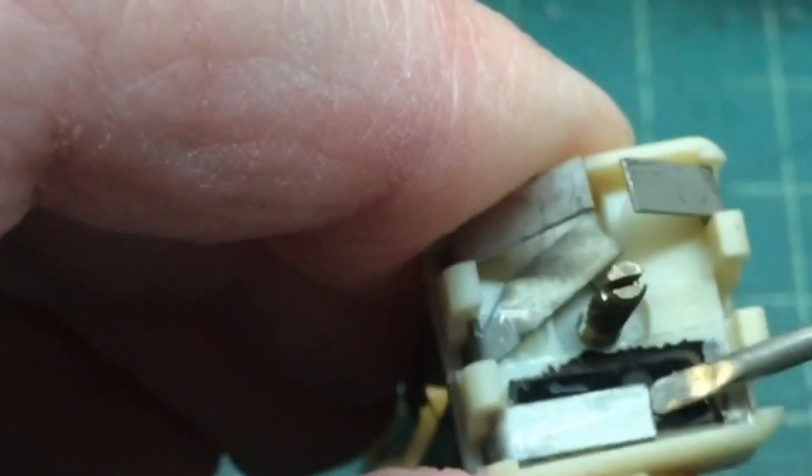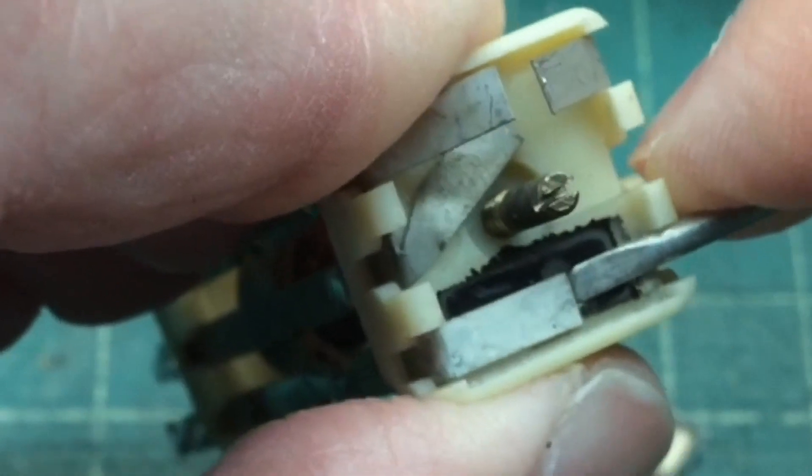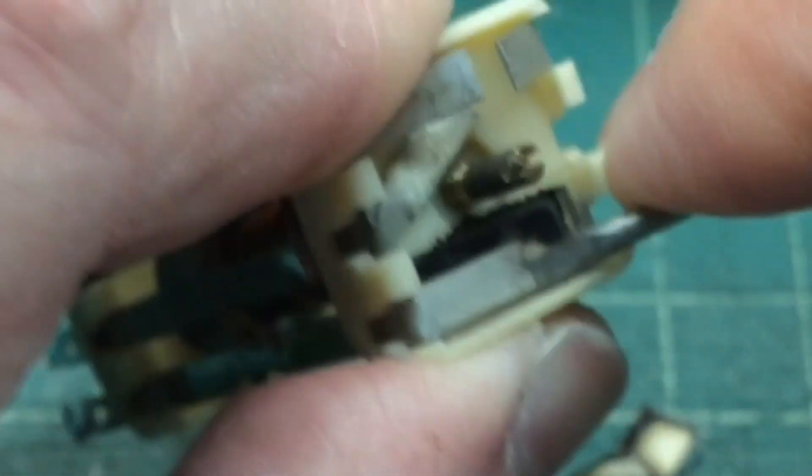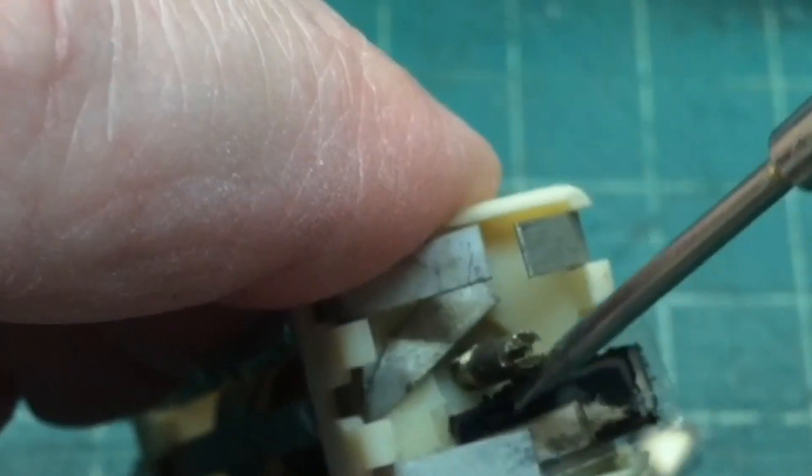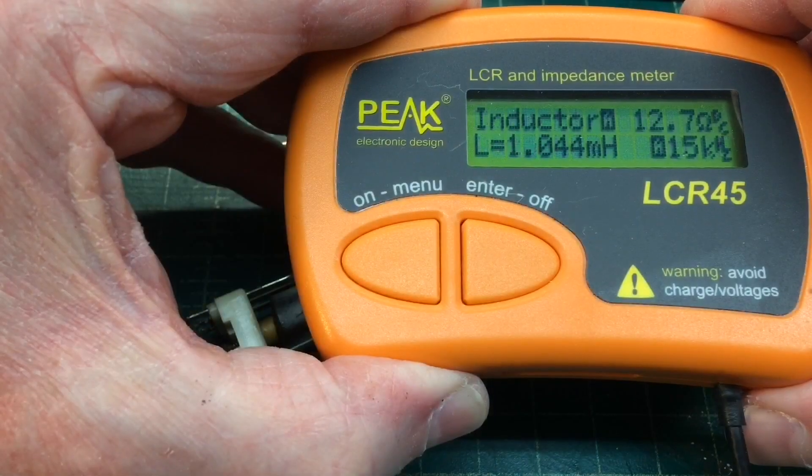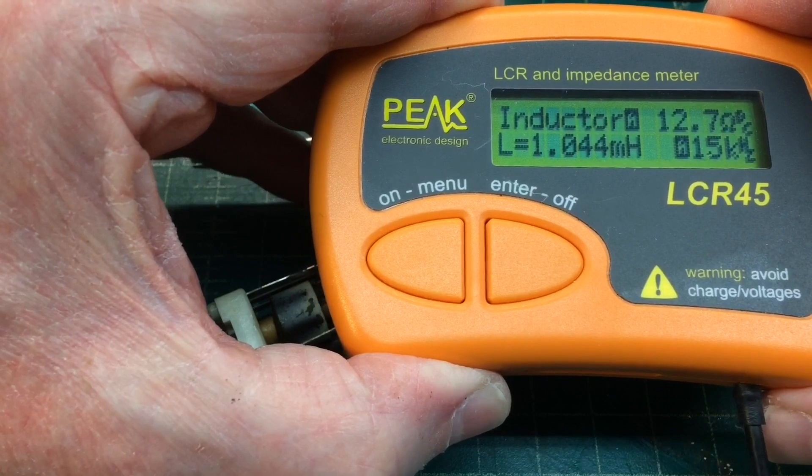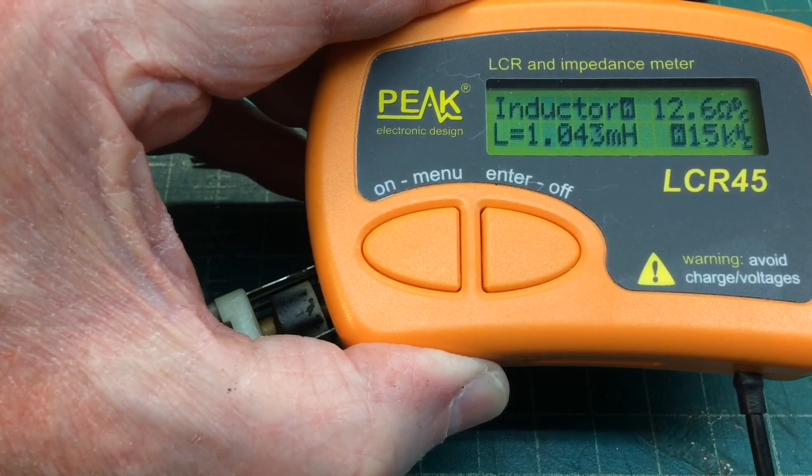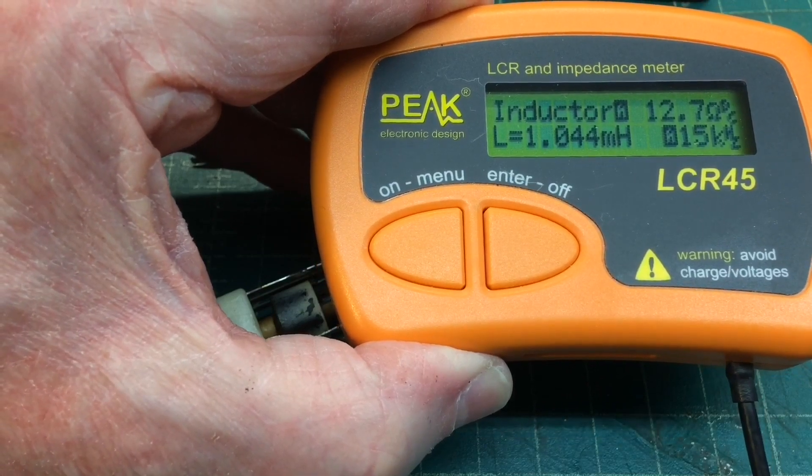More mica removal here off of the T2 transformer on the primary side. And then we'll take a look at inductance and DC resistance of the coils for documentation. And very similar here to the secondary side on the primary, you can see 12.6 ohms of DC resistance and 1.044 millihenries.